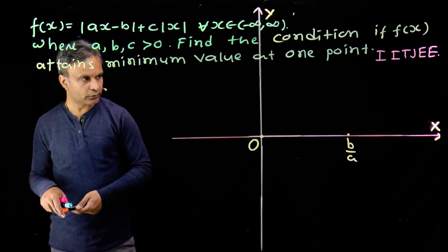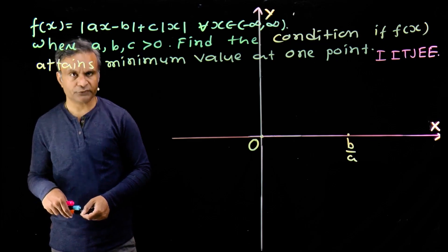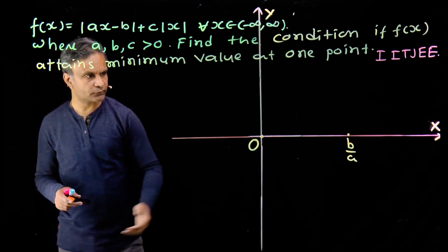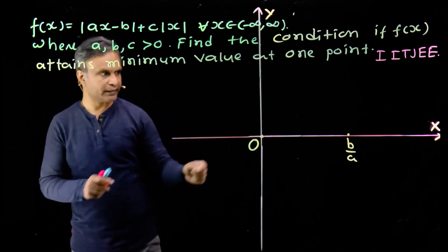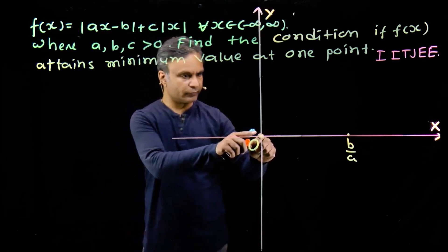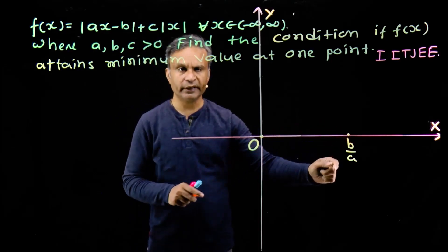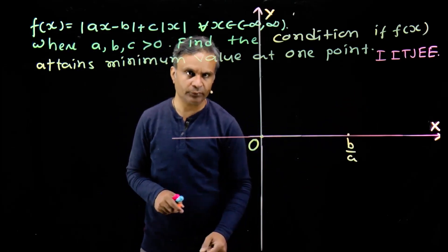For the graph, we need branch functions: one for x less than zero, one for x lying between zero and b upon a, and one for x greater than b upon a.